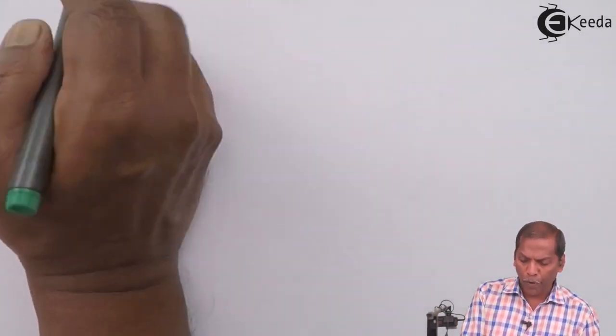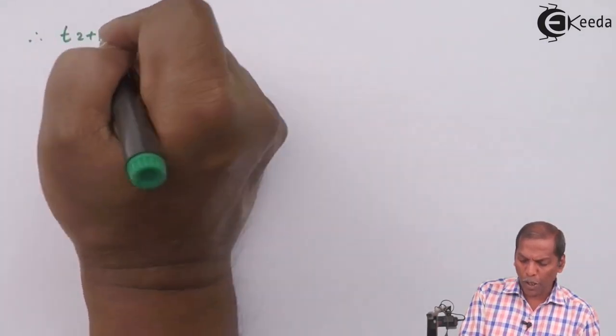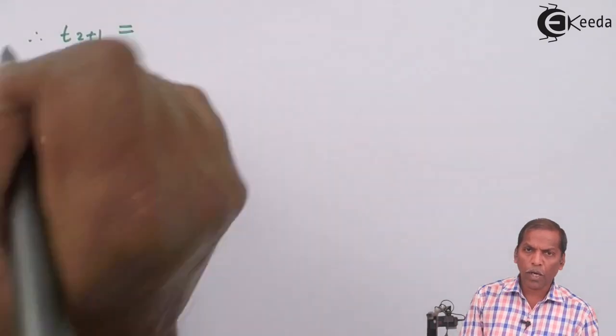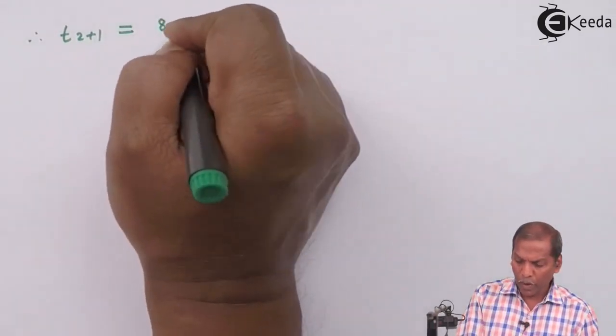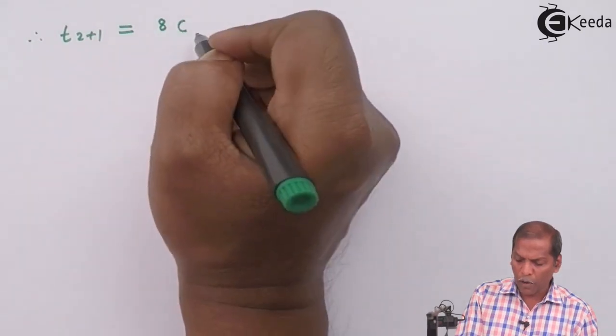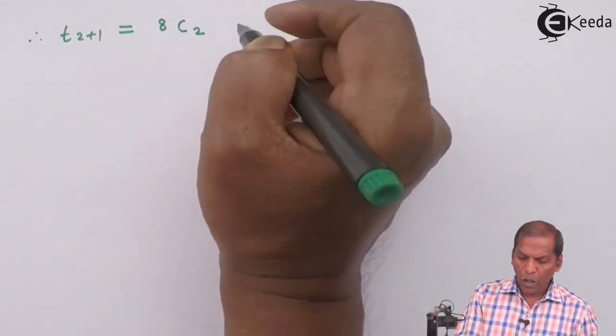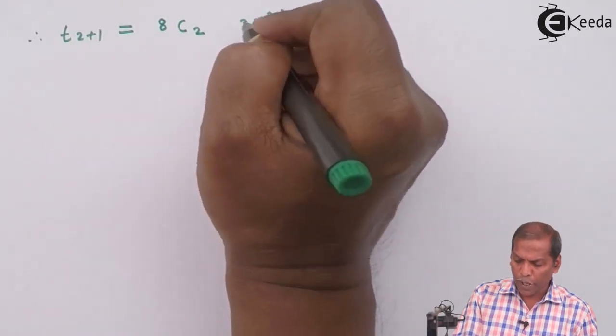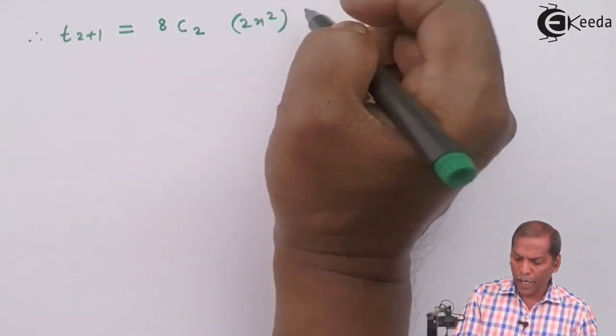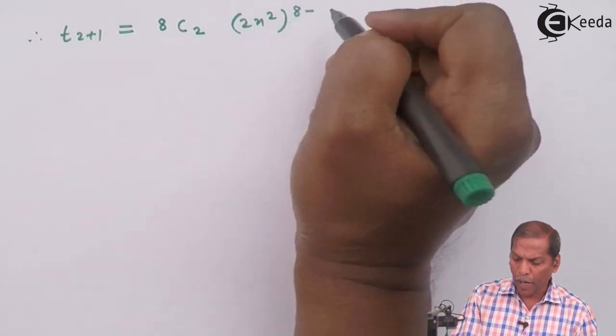The next step will be t₂₊₁ = t₃ = 8C2 × (2x²)⁸⁻² × (3/2x)².